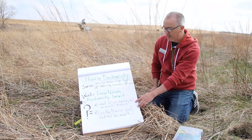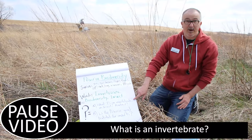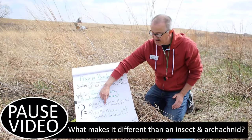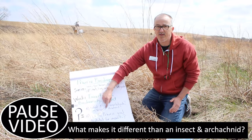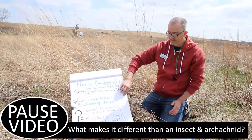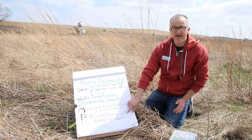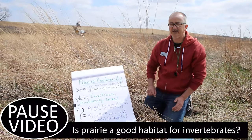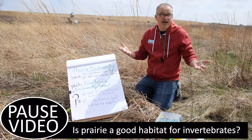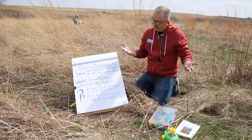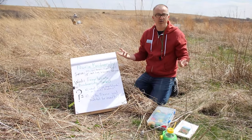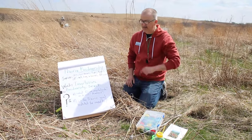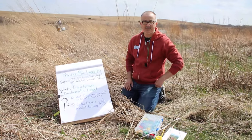Here are our questions to wrap up the activity: What is an invertebrate? What makes it different than an insect and an arachnid — how are those two different? And finally, after our searching through the prairie, do you think it is a really good habitat for invertebrates? Is it good for other animals? I think we saw signs that it was. Explore your own area, look up more about the prairie and its biodiversity, and enjoy the activity. We'll be back with another one in just a minute.